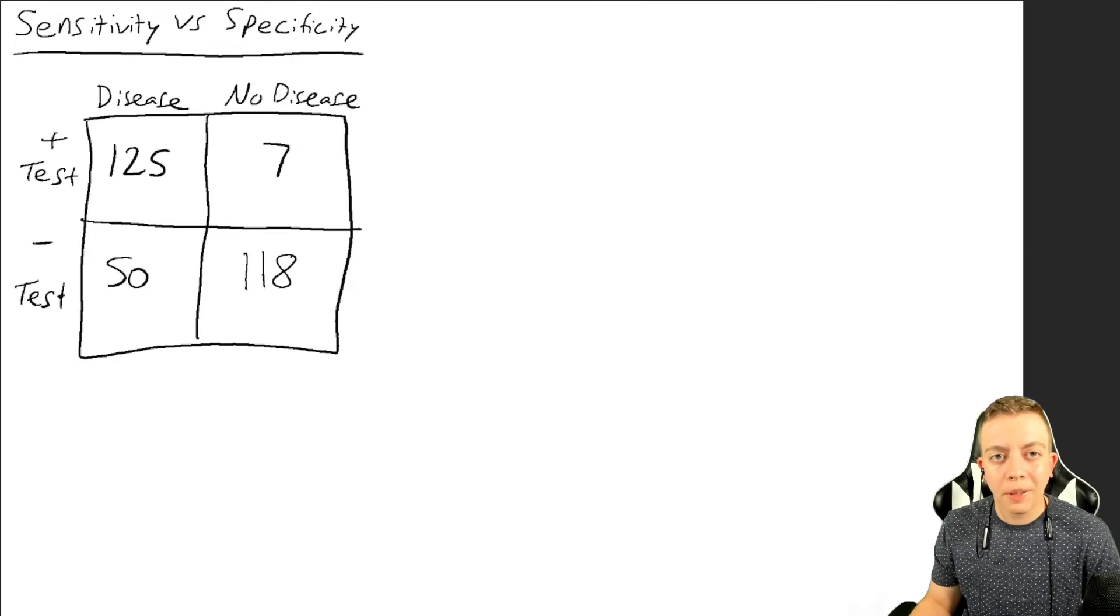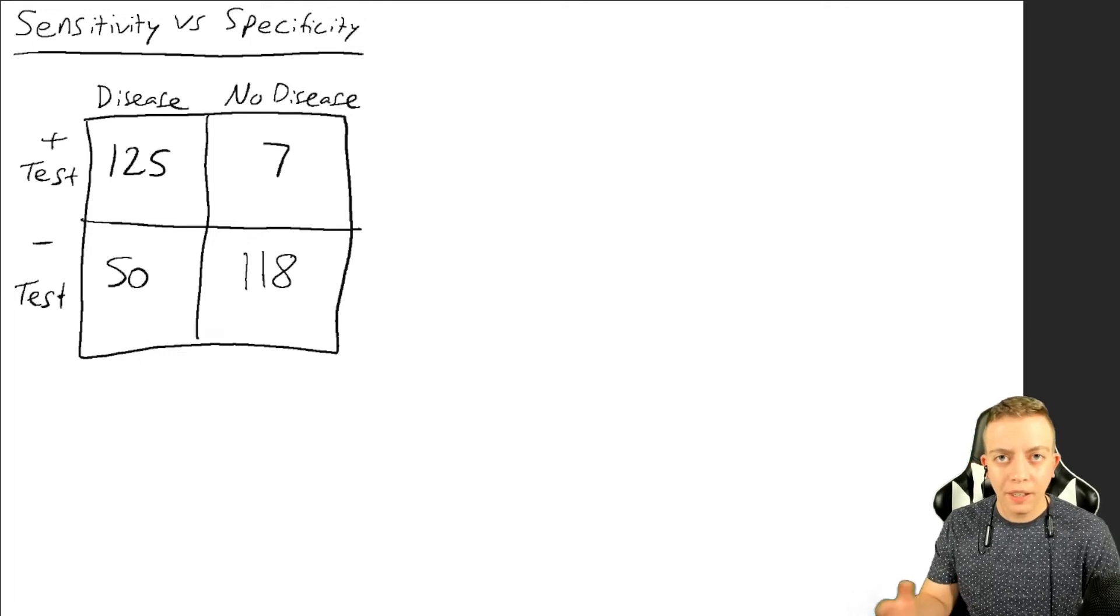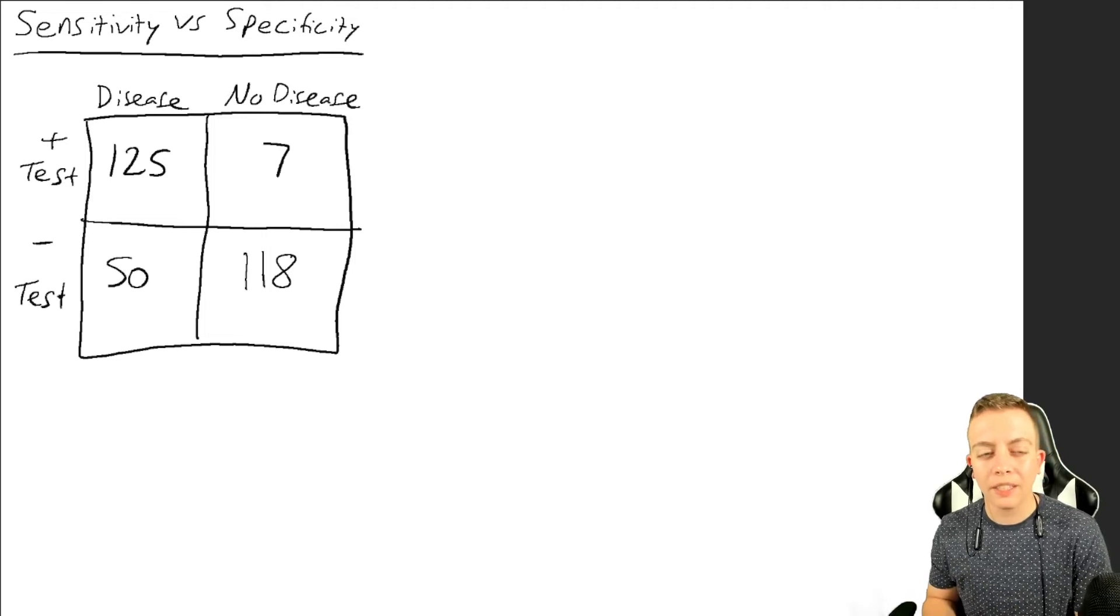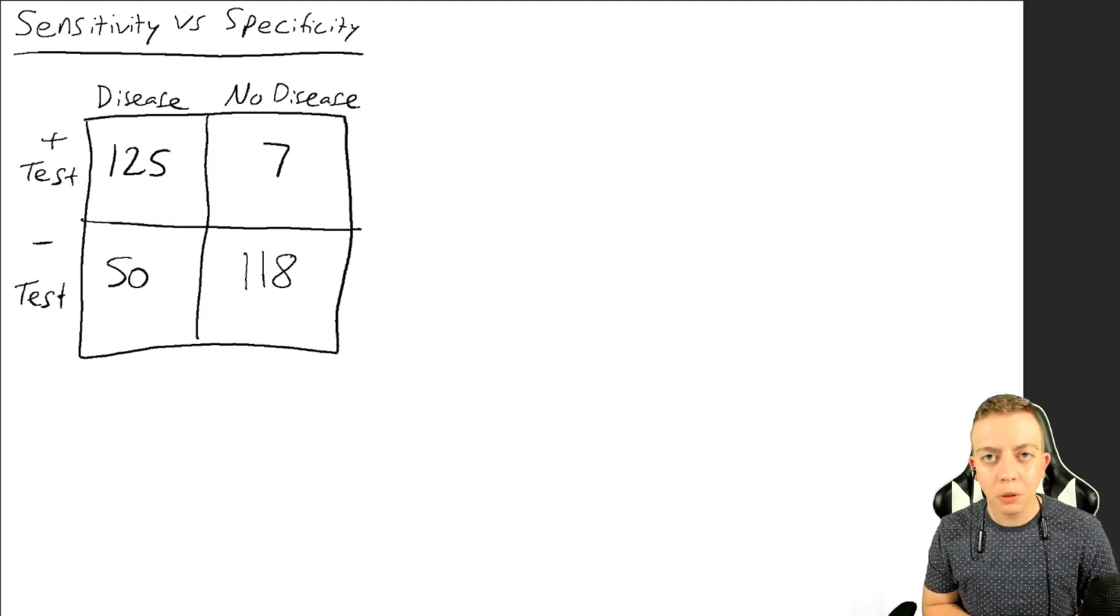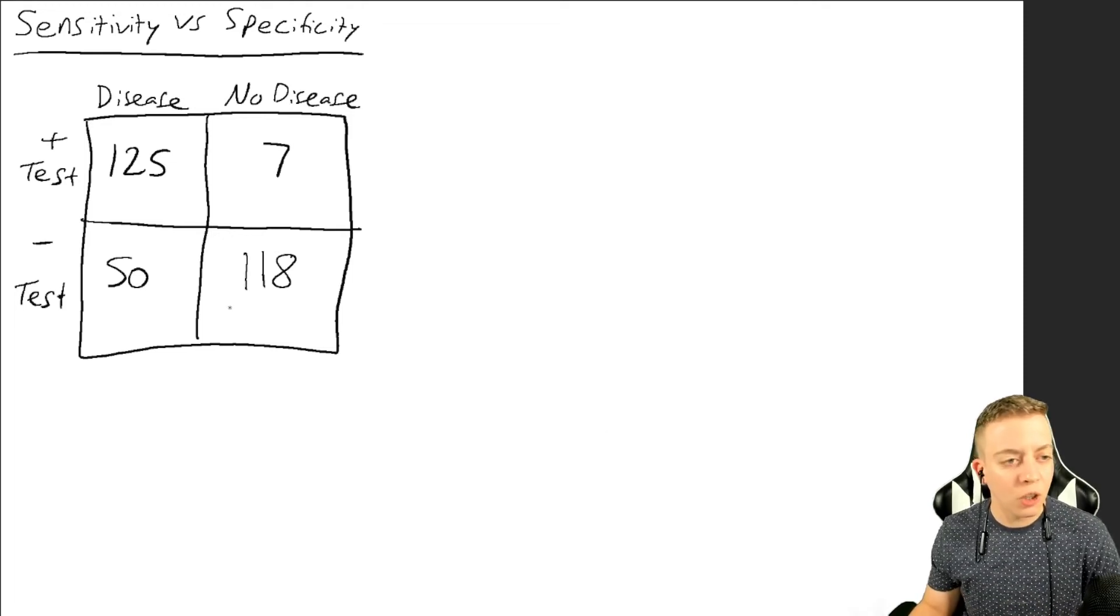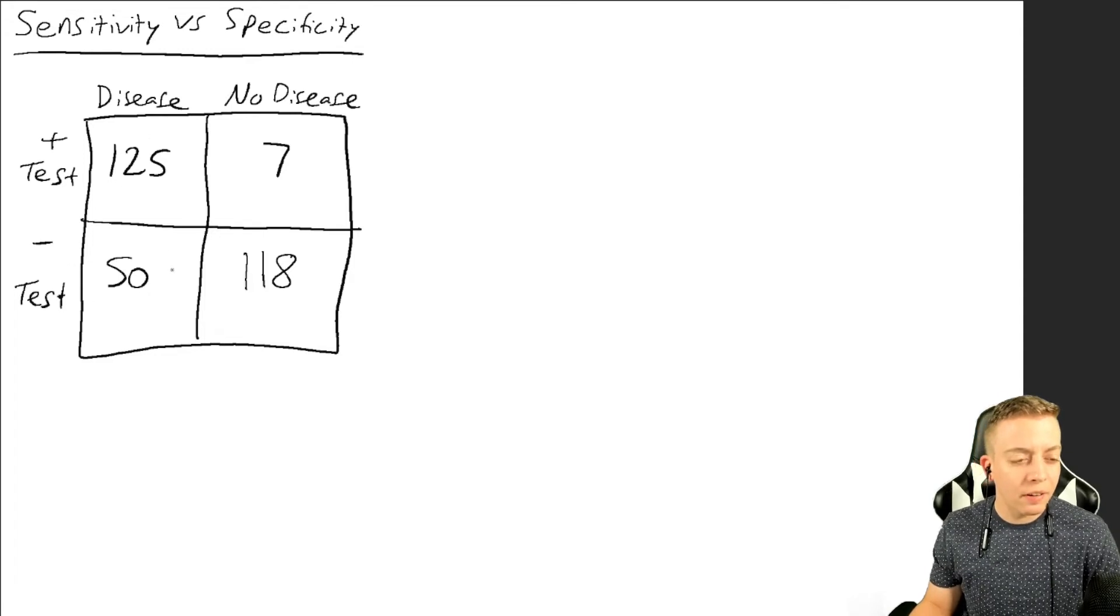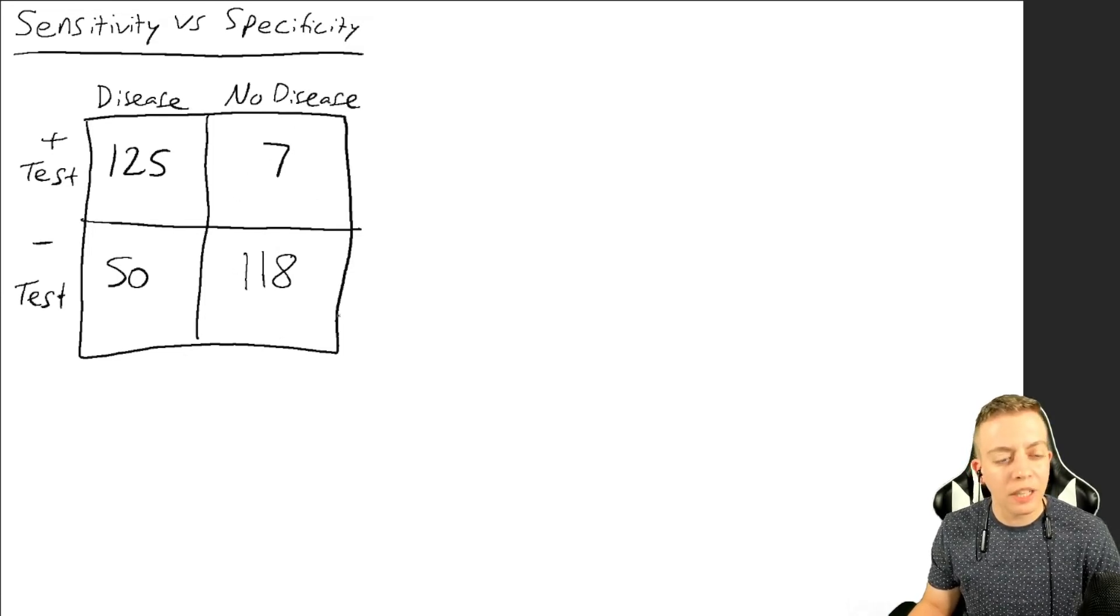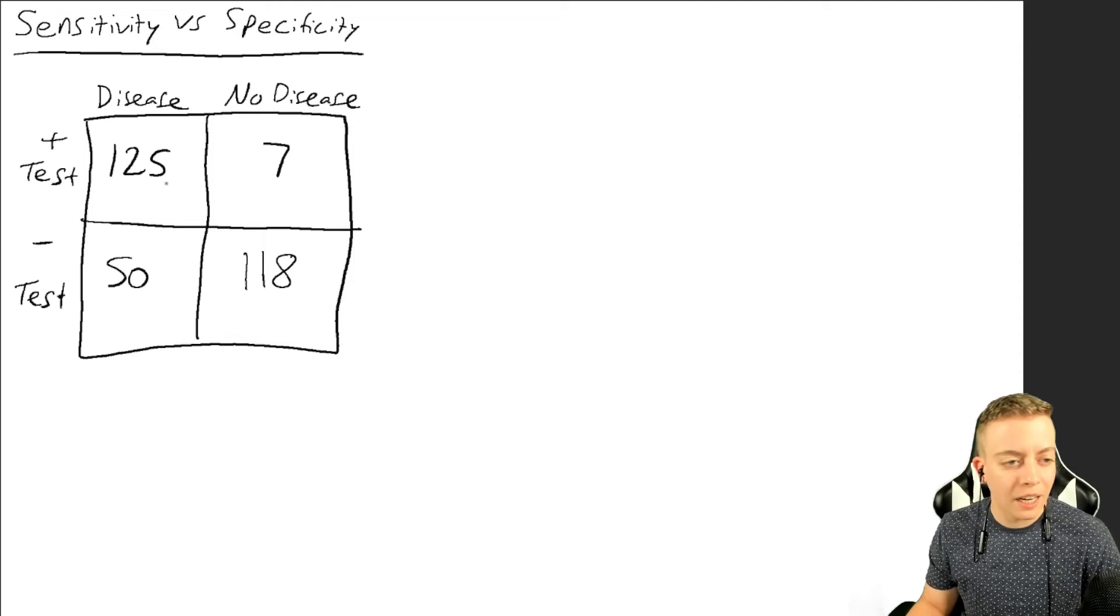Here we have a hypothetical situation. Let's say I'm developing a test to detect for some disease, and I want to see how well it does at picking up people who have the disease and ruling out people who do not have the disease. I threw some random numbers into this chart. We have 125 people who have the disease who tested positive, 50 of them have the disease who tested negative, seven people who did not have the disease tested positive, and 118 people without the disease tested negative.